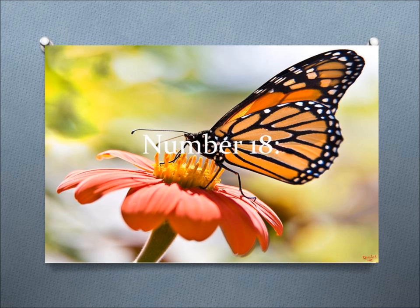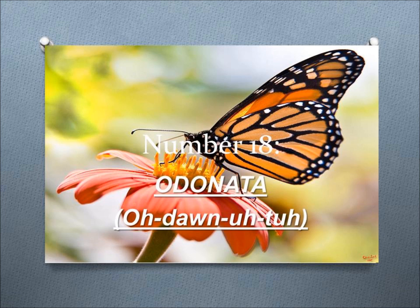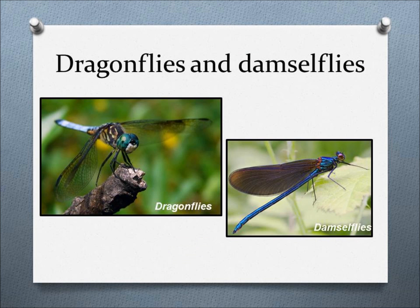Number 18, Odonata. This order includes dragonflies and damselflies, large insects with four wings as adults, and are hungry underwater predators as juveniles.